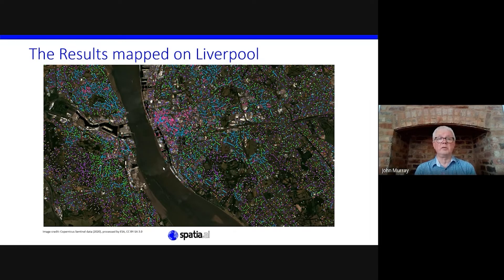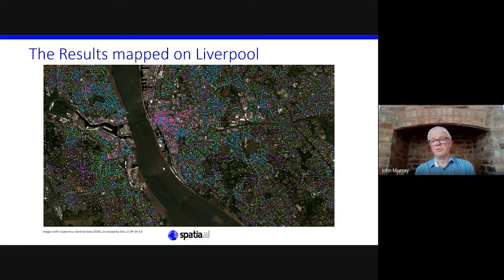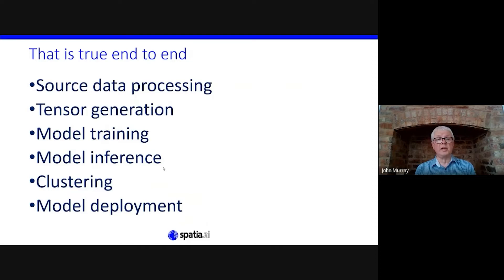These are the results of our model mapped on Liverpool city center. Each dot represents the center of a neighborhood, and the same color indicates classification as similar. You can see it has classified large buildings in the city center as similar, classified terraced houses correctly, and as you get into the suburbs with larger houses and leafy avenues it classifies those very well too — with no training labels, just grouping things that look alike. This is true end-to-end: we process source data, generate tensors, train the model, run inference, cluster the output, and deploy — all within TensorRT and the Arrow ecosystem.